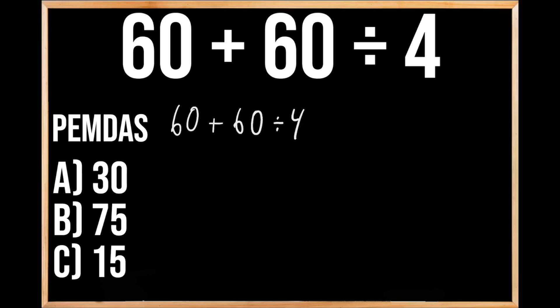So when looking at this problem, a lot of people will just solve from left to right. So first, they're going to add 60 plus 60, which we know gives us 120, and then they're going to divide that 120 by 4. And when we divide 120 by 4, we get 30, so our answer here should be A, 30.